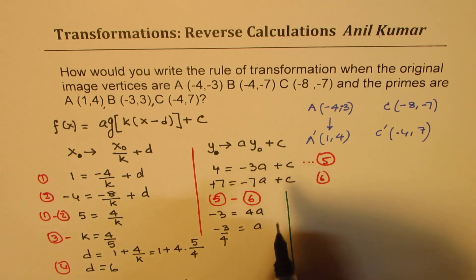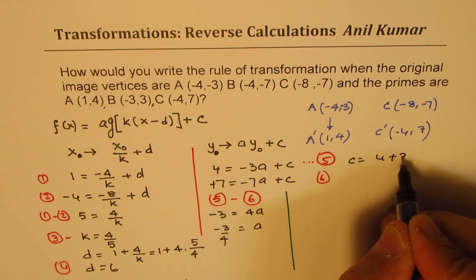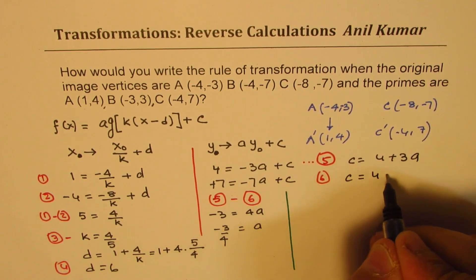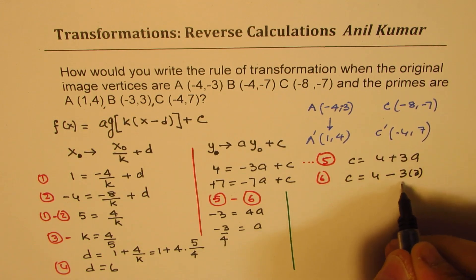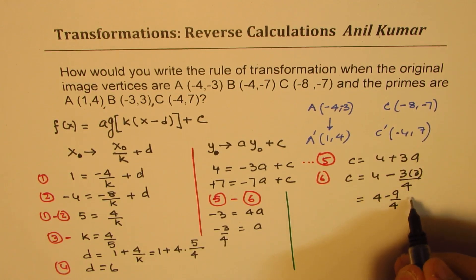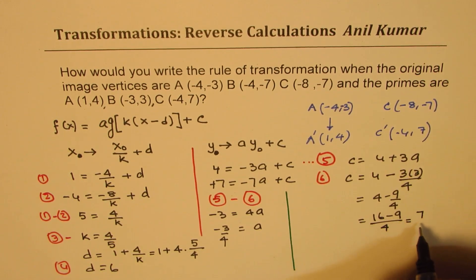And we can find c using the value of a which we just calculated. So we can write c from one of these equations: c = 4 + 3a. Substituting the value of a, we get 4 - 3 × (3/4), which is 4 - 9/4, which is equal to (16 - 9)/4, or 7/4. So that is the value of c.